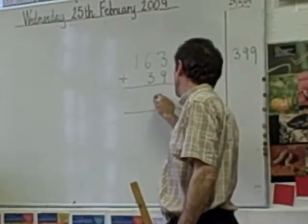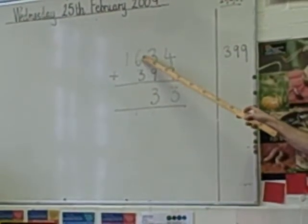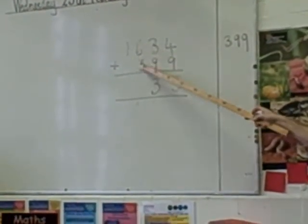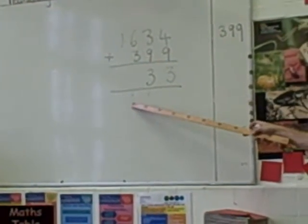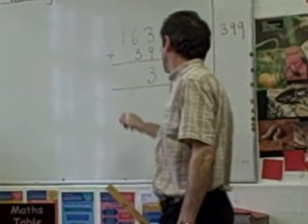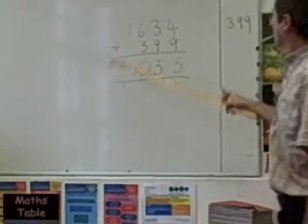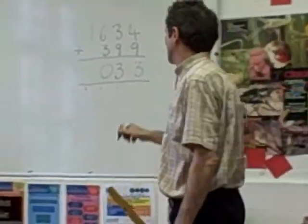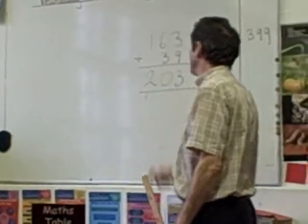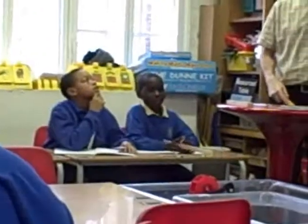Watch how I write it — I hope Renner's watching. I've got 600. 300 is 900. 100. 1,000. 2,000. So the answer is 2,000 and 33. Hands up — we've got it. Nice and clear.